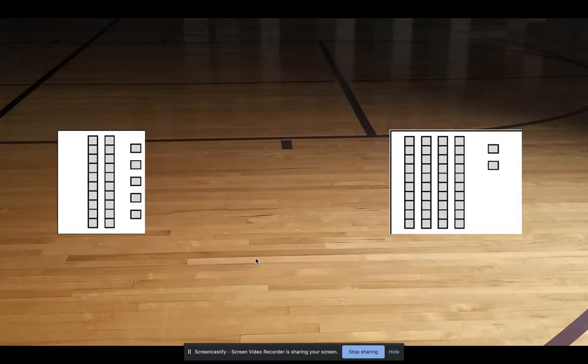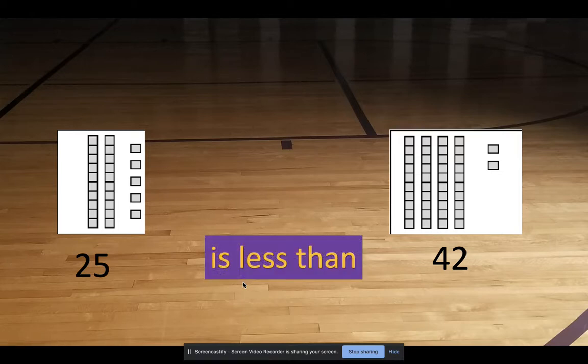Now over here, we have the number 25. And here we have the number 42. So which one is smaller and which one is bigger? Of course, we always read it from left to right. So how would we read this? Since 25 is a smaller number, we're going to say that 25 is less than 42.